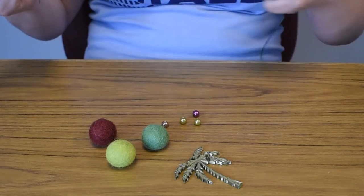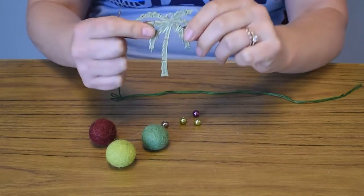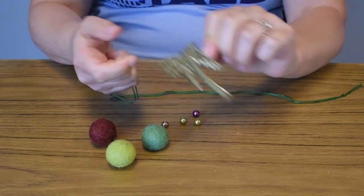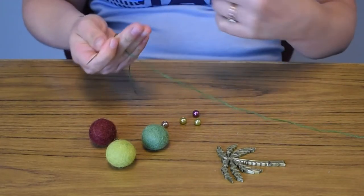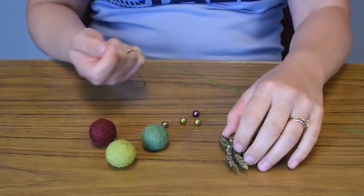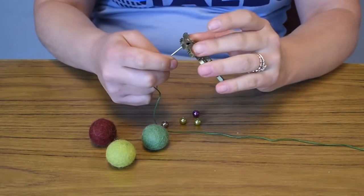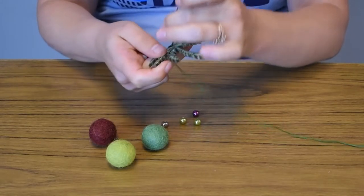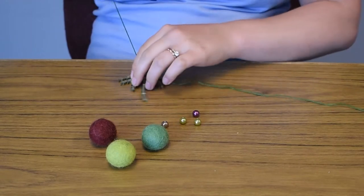So first thing is first, you'll want to start with your charm right here. I personally like to pull my thread all the way through. I'm not going to tie my end right now because I want to be able to maneuver it if I need to. So just take your needle and thread it through whichever charm you got.